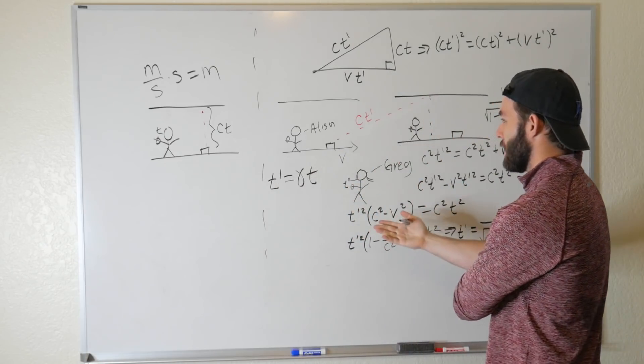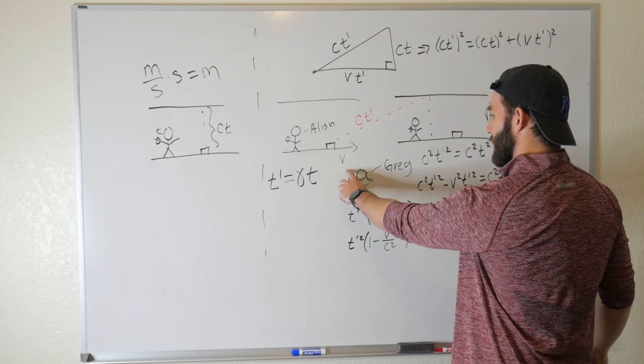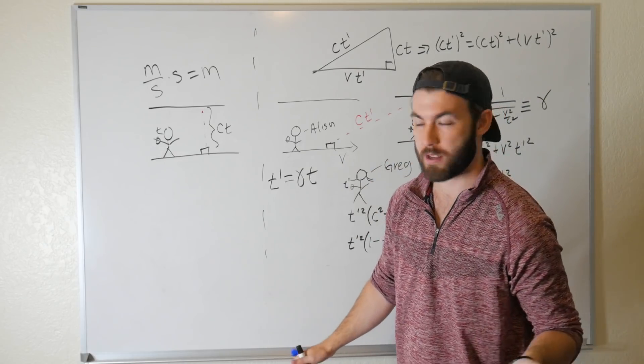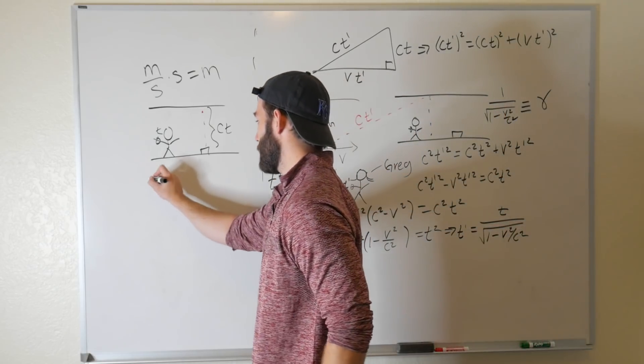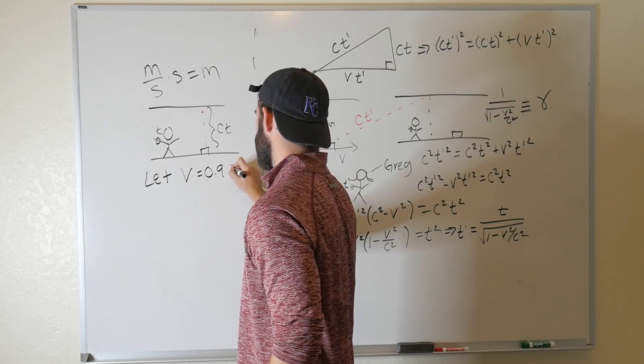And what does that mean? Well, I think the best way to picture this is to actually maybe put in some numbers. So let's say that Greg observes the ship to be traveling at 90% the speed of light. So if we let V equal 0.9C,